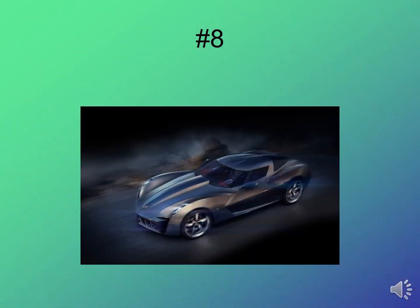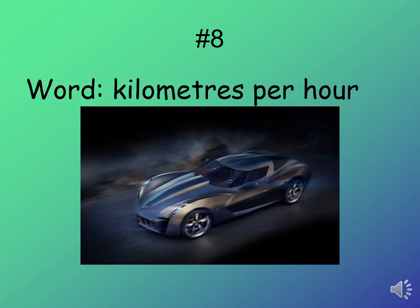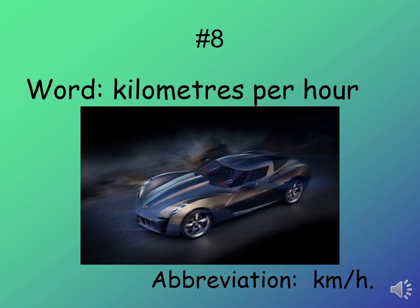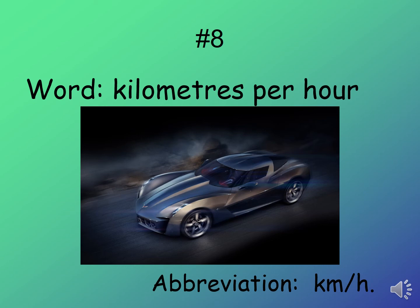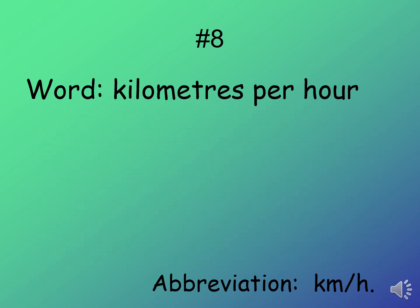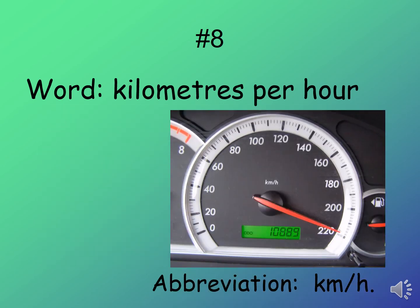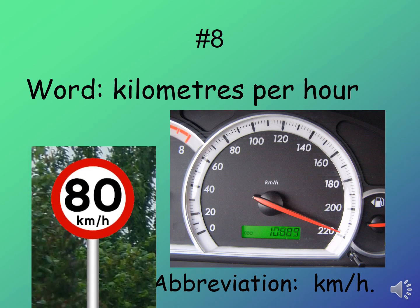How fast can your car go? It is measured by kilometers per hour. To abbreviate this, we use the first letter of each word, so we will use K, M, slash, and H, and full stop. You can see this in front of your car.